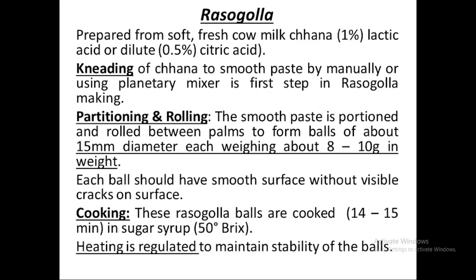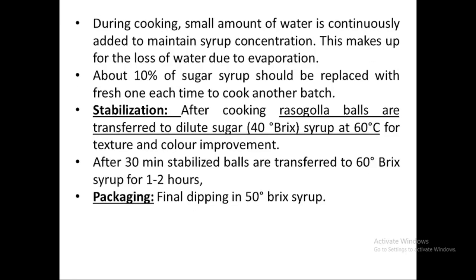Cow milk gives soft curd, which is preferred for chana preparation. Once the chana is obtained, we knead it into a smooth paste, sometimes adding a binding agent such as semolina or refined wheat flour and a small amount of baking powder. We then shape it into balls and cook it in sugar syrup at about 50° Brix for 14 to 15 minutes.